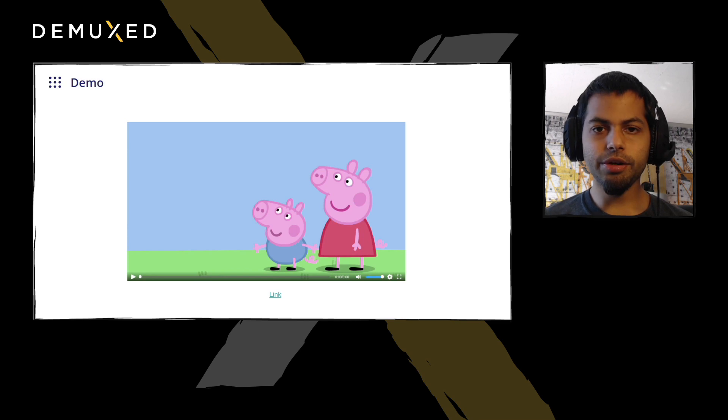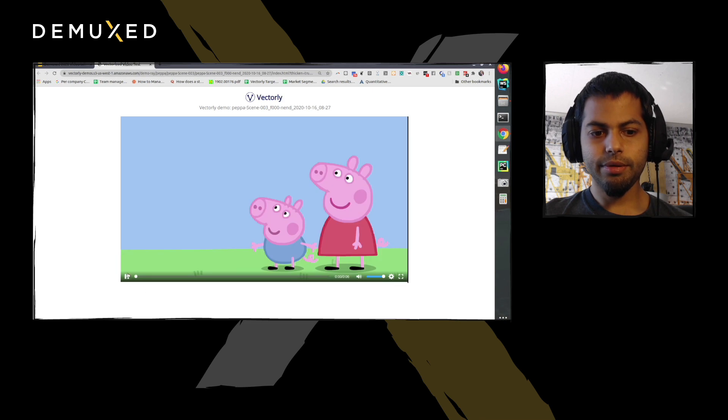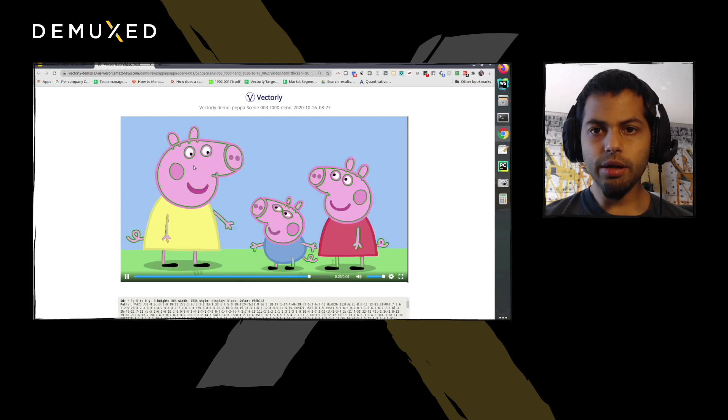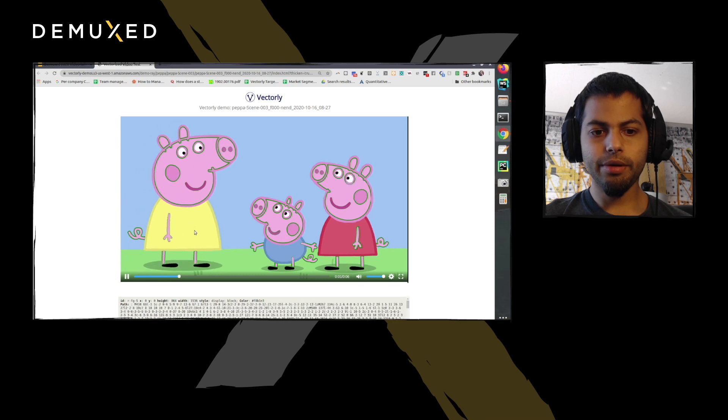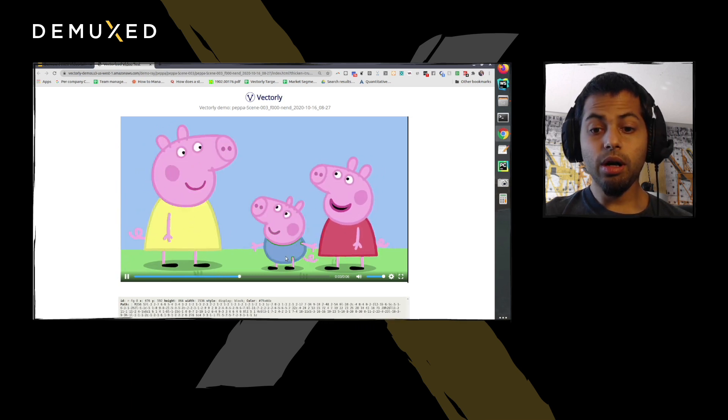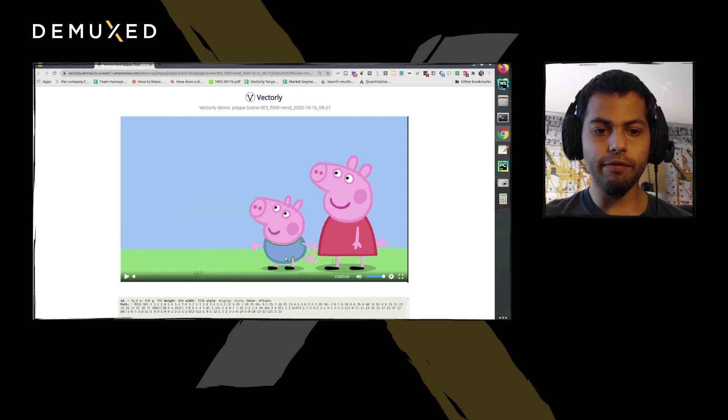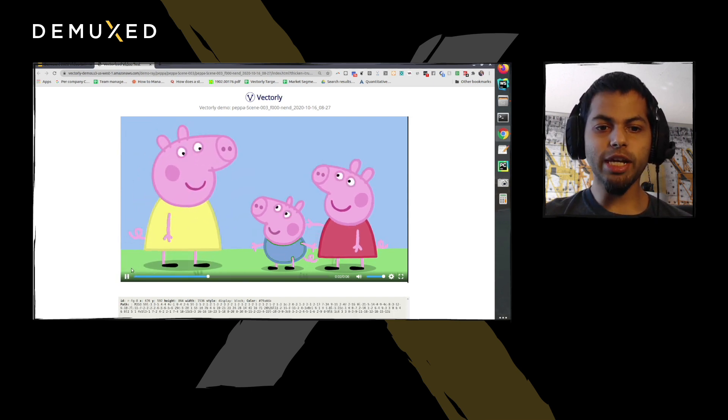To see what that looks like, consider a 7-second clip of Peppa Pig which we vectorized. This looks and feels like a normal video, but if you actually inspect in the browser, you'll see the vector graphics objects as they're changing over time. One key thing to keep in mind is that this is a full 4K video that we vectorized, and we encoded it at 20kbps.